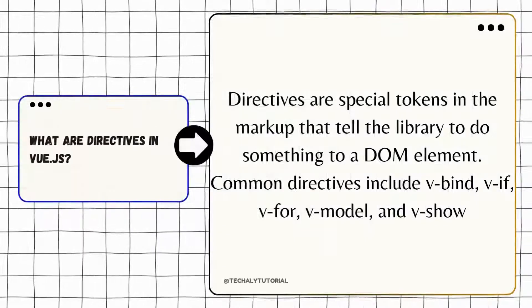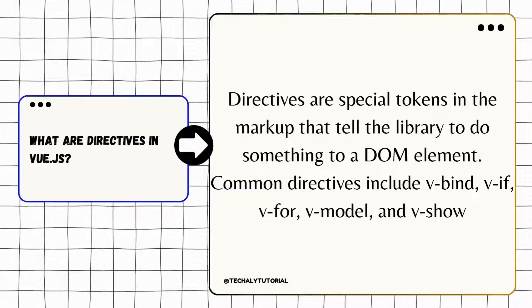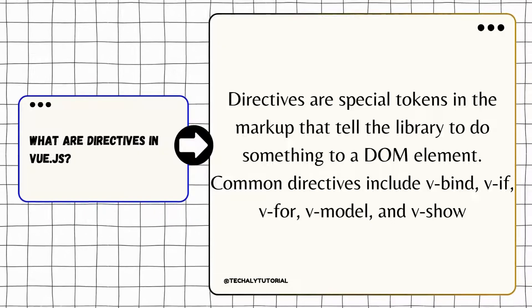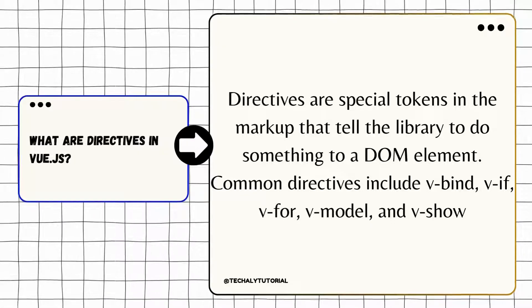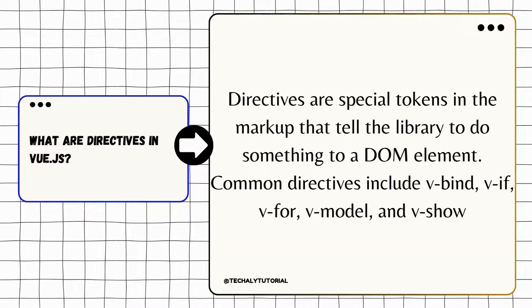Directives in Vue.js: directives are special tokens used in Vue templates to apply behavior to DOM elements. Examples include: v-bind (dynamically binds an attribute), v-if (conditionally renders an element), v-for (loops over data), v-model (enables two-way binding), and v-show (toggles the display of an element).